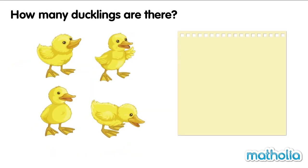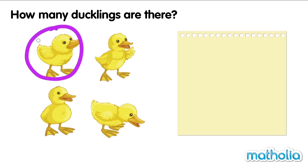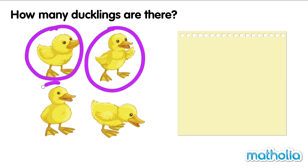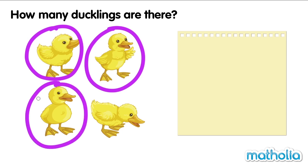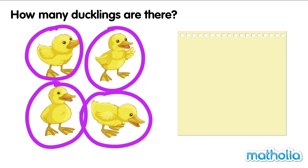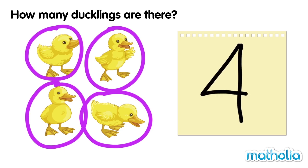How many ducklings are there? One. Two. Three. Four. There are four ducklings. Four.